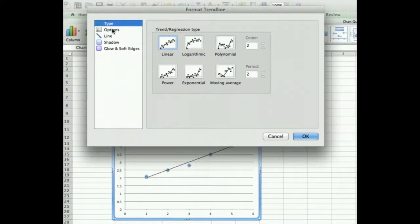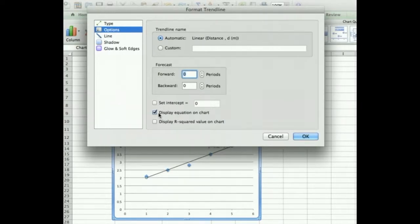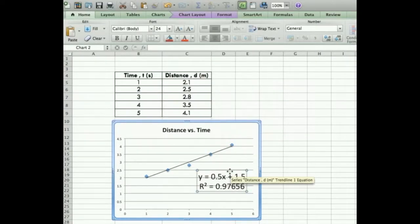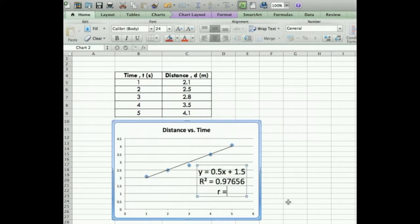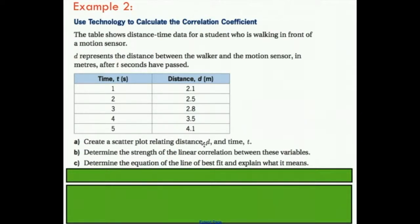We want a linear trend line. Go to options and display the equation on our chart, and also display the r-squared value. What we have here is a nice equation for our line with a slope of 0.5 and a y-intercept of 1.5. We're interested in our r value, not r-squared, so if we take the square root of that, we get approximately 0.9882.